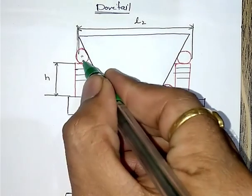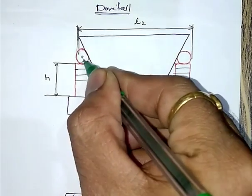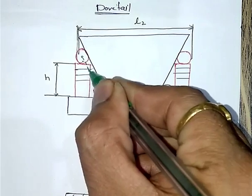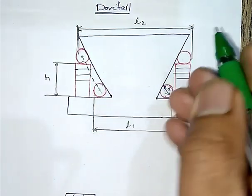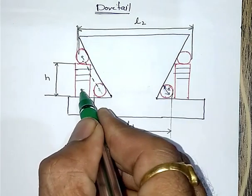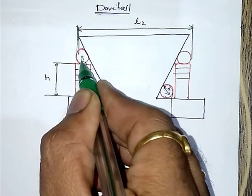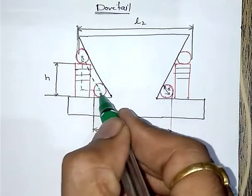What I will do, I will join these two centers of two different rollers or spheres with a dotted line and I will complete the construction as shown in this figure.